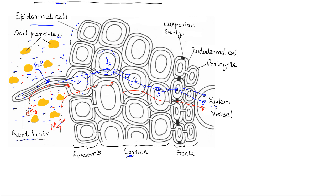In summary, water is taken up by osmosis to the xylem, and mineral salts are absorbed by both diffusion and active transport along the various tissues to the xylem. Once in the root xylem, the water and mineral salts will then move up the stem to the leaves and other parts of the plant.